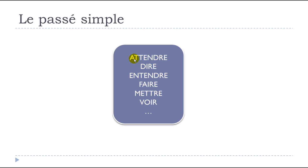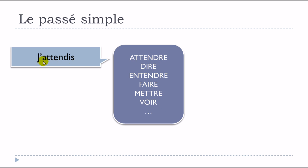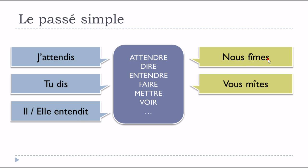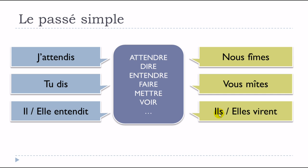A few more verbs with their passé simple forms: ATTENDRE (to wait), DIRE (to say), ENTENDRE (to hear), FAIRE (to do), METTRE (to put), VOIR (to see). For example: j'attendis, tu dis, il entendit, elle entendit — these follow the patterns we've discussed.